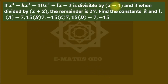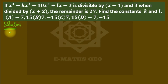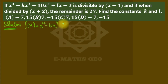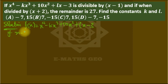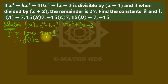The problem states that if this polynomial is divided by another polynomial and one is divisible by that, we need to find the constant. We're going to use both remainder and factor theorem here. Let's call the polynomial f(x) = x⁴ - kx³ + 10x² + lx - 3. For x minus 1 to be a factor, if x - 1 = 0, then x = 1, and substituting 1 gives remainder 0.